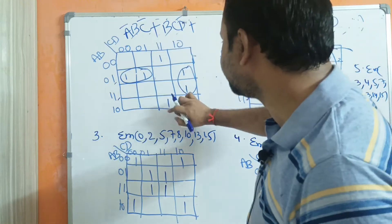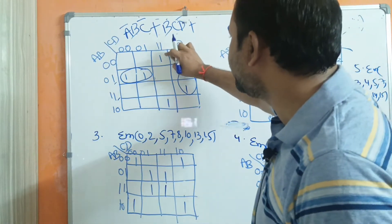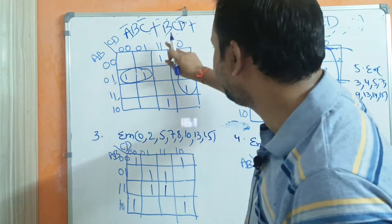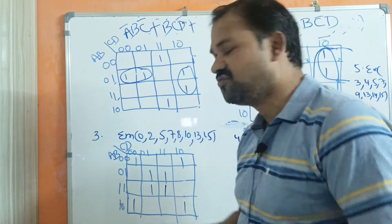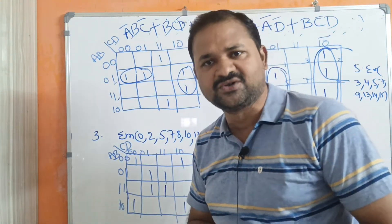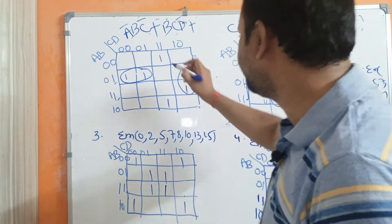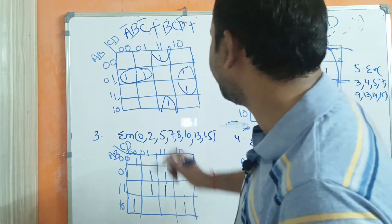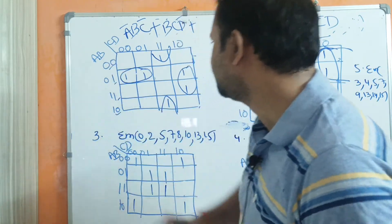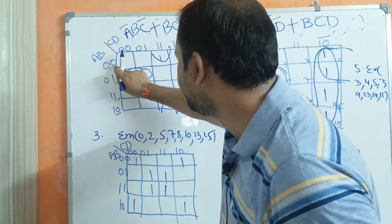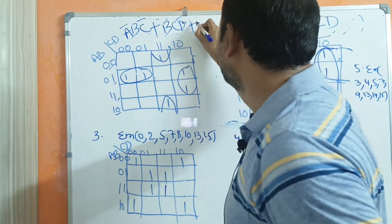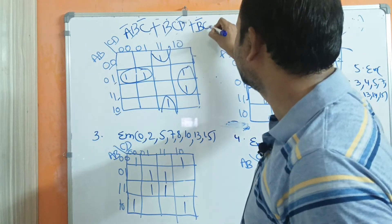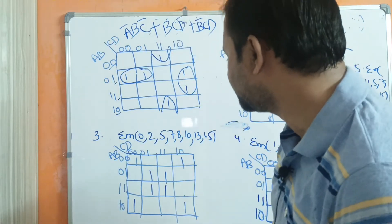Here we have 2 more ones, so we can make these 2 as a pair. They differ by only one variable so they are adjacent cells. If we observe these 2 cells: A=1,1 — B is changing — and C,D is 1,0. The common B value is 0, so we write B̅. And 1,1 means CD. The simplified expression for this problem is A̅BC̅ + BCD̅ + B̅CD.